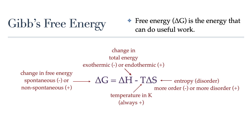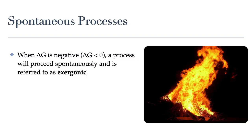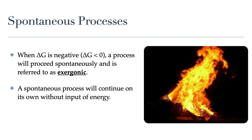So if you don't need to make calculations, what is it that you need to know about this equation? Mostly you will be asked to predict whether or not a reaction or process will be spontaneous based on its delta G or change in free energy. When the change in free energy, or delta G, of a process is negative, we call that an exergonic process or an exergonic reaction. Exergonic reactions proceed spontaneously — meaning they will continue on their own without any input of energy.